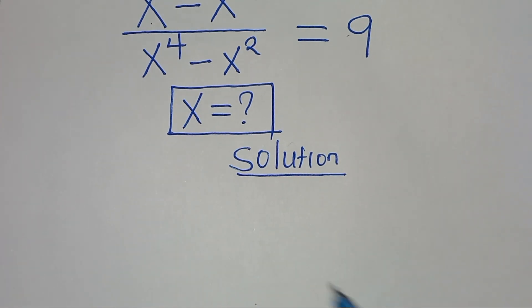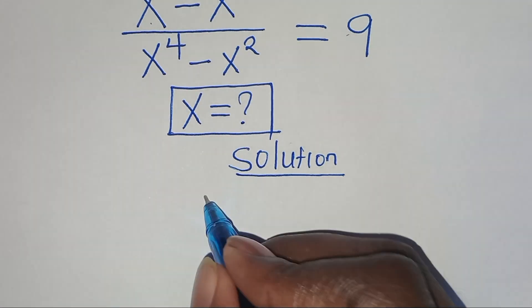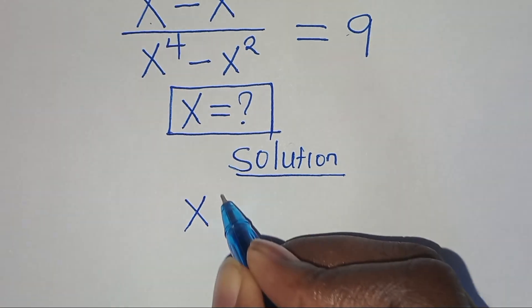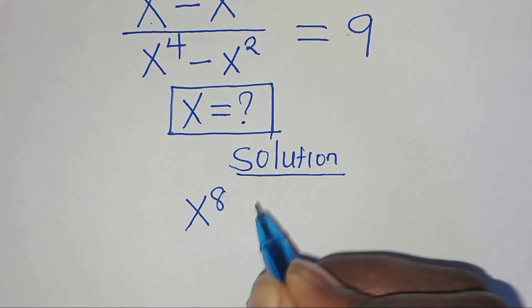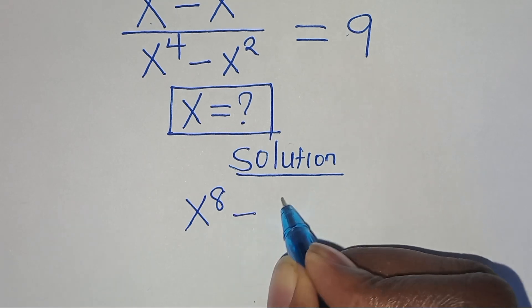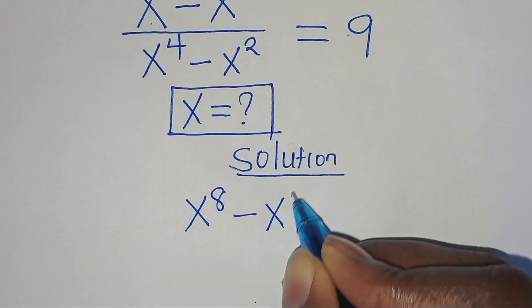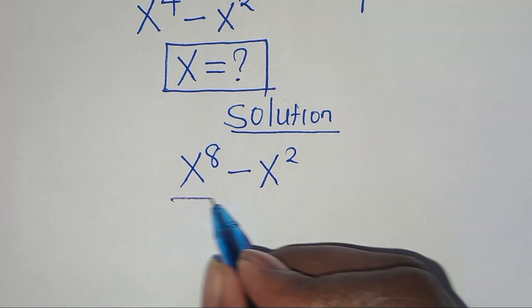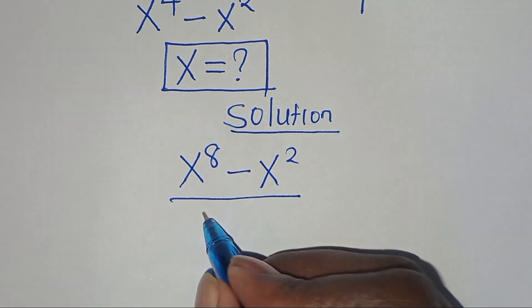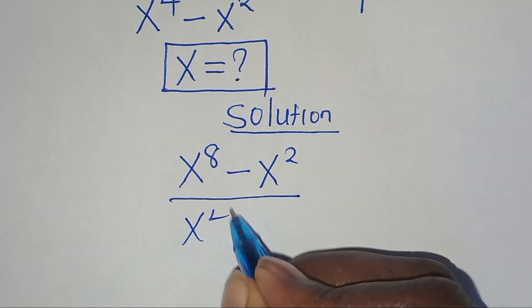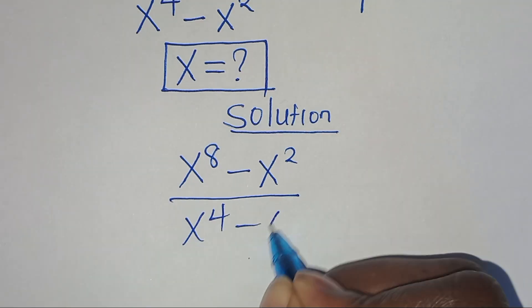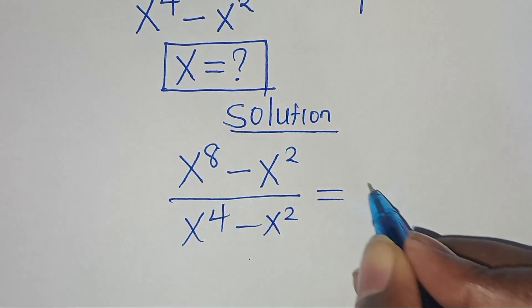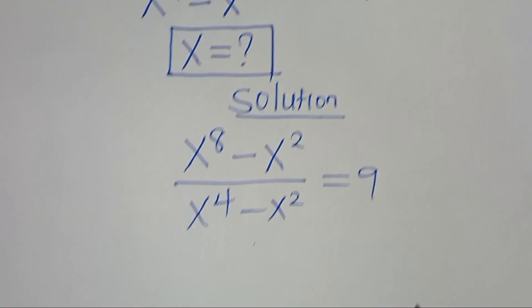So in the numerator, we have x to the power of 8, subtract x to the power of 2, divided by x to the power of 4 minus x to the power of 2, this is equal to 9.